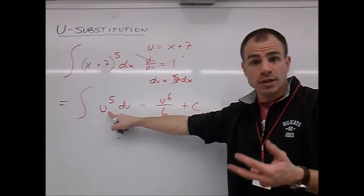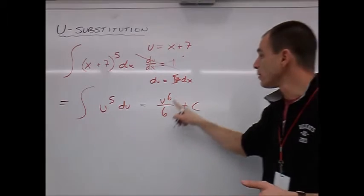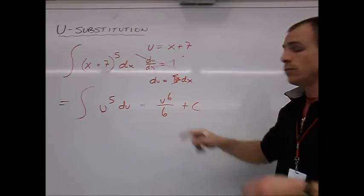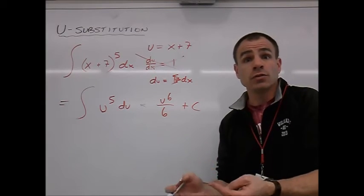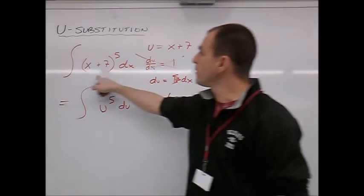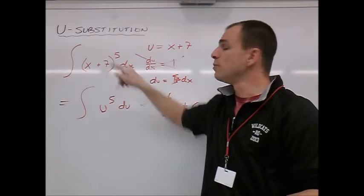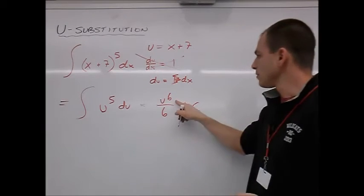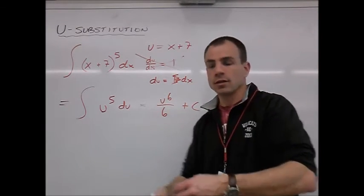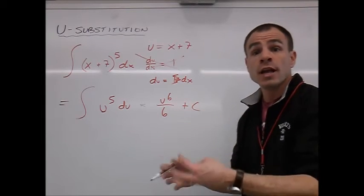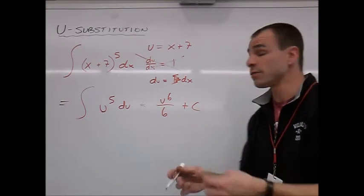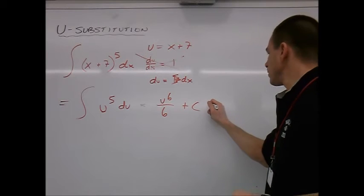We can use our basic antiderivative rules on any variable. Now, we now have taken the antiderivative, so this is good, but keep in mind that ultimately we want the antiderivative of x plus 7 to the 5th. And there's no mention of x here. So we have to back substitute in. Yes, we used u to get our answer, to get our antiderivative, but ultimately, we want to have an answer with respect to x.